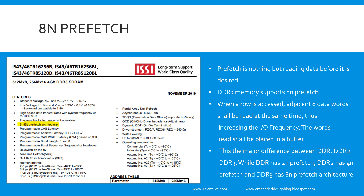By keeping data in a buffer, you need not every time go and enable the row or column and then access the data. You read a bunch of data, place it in a buffer, and read it based on requirement. That is how prefetch can be defined in short.